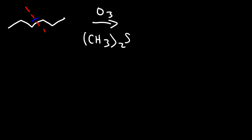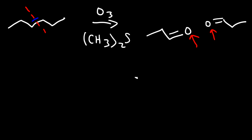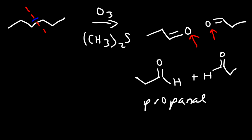Ozone will cause this molecule to split in half. What's going to happen is you're going to get two carbonyl groups. Basically once you split it in half, you've added oxygen to each side of the double bond. If we redraw it, it will look like this. These two products are the same, so we get propanal as our final answer for this product.